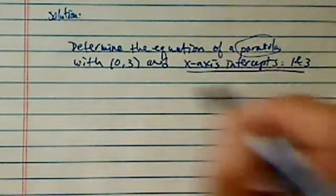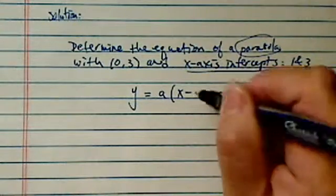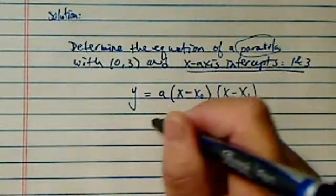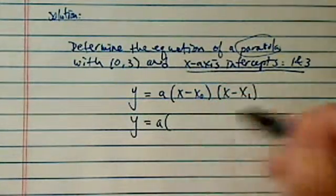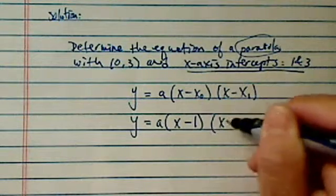It said x-intercepts are given. Given that the intercepts are 1 and 3, I have x minus 1 and x minus 3 as the factors.